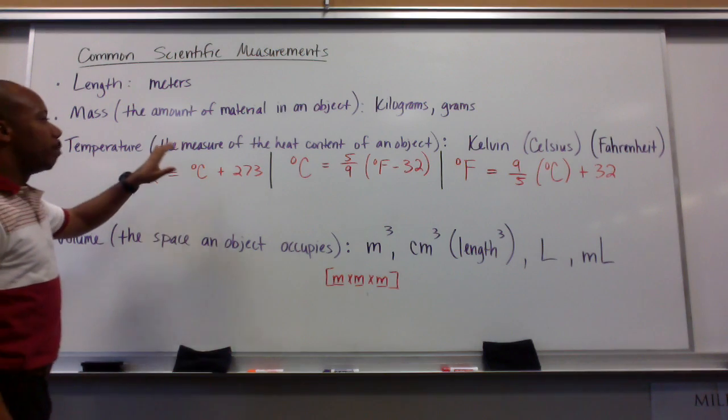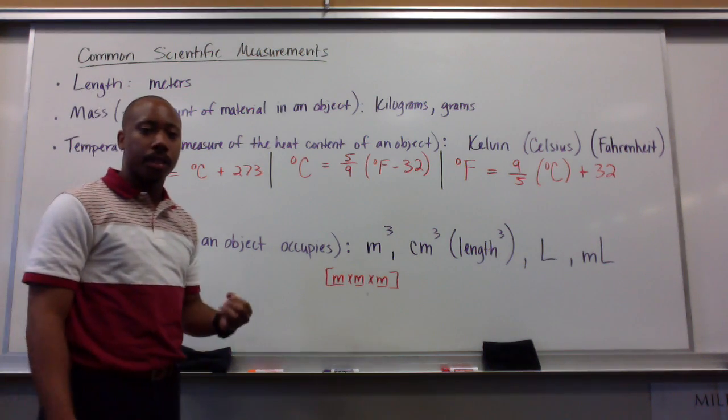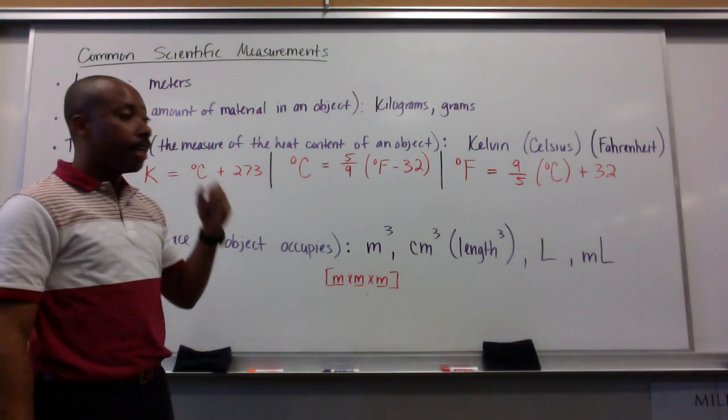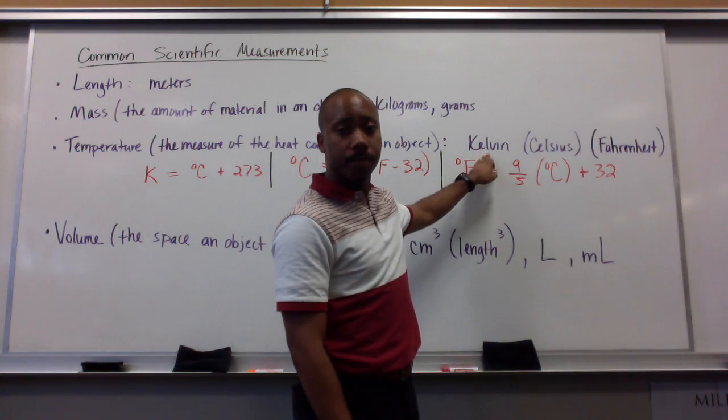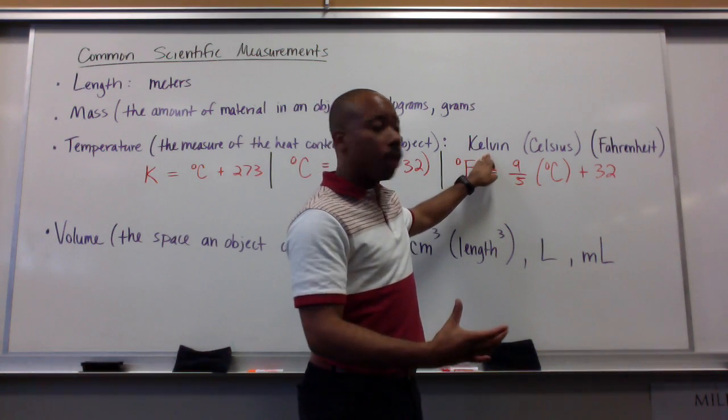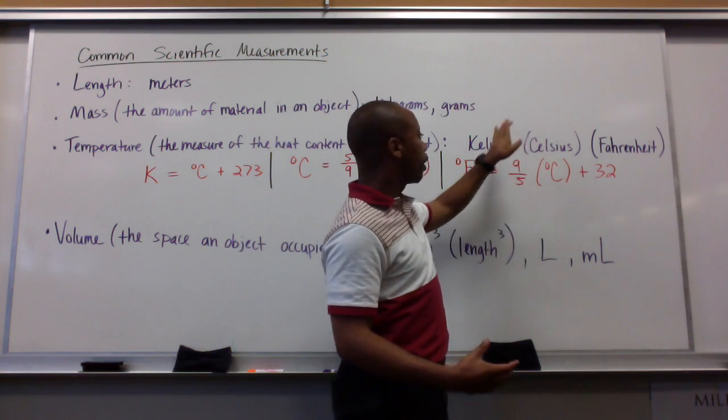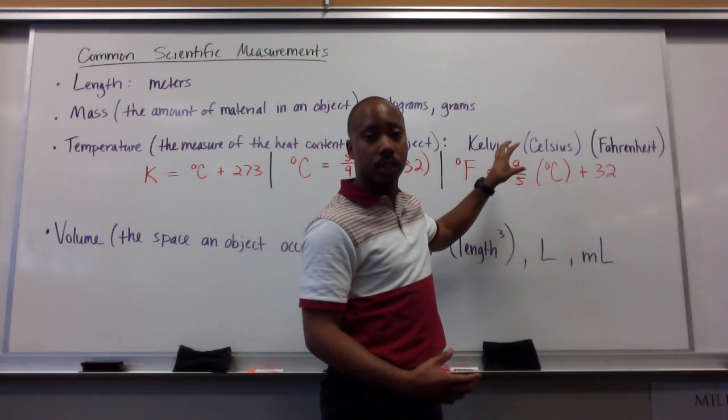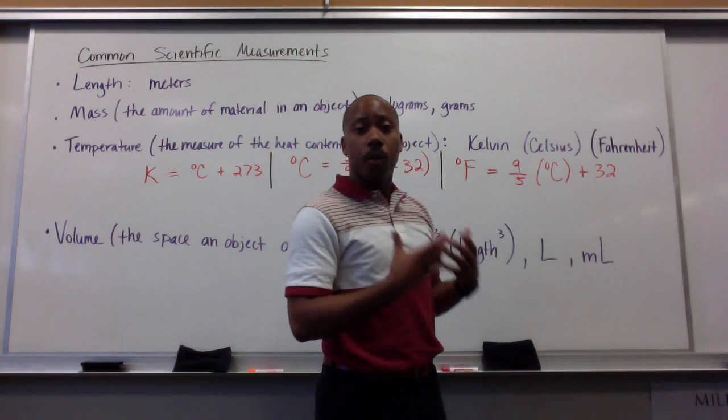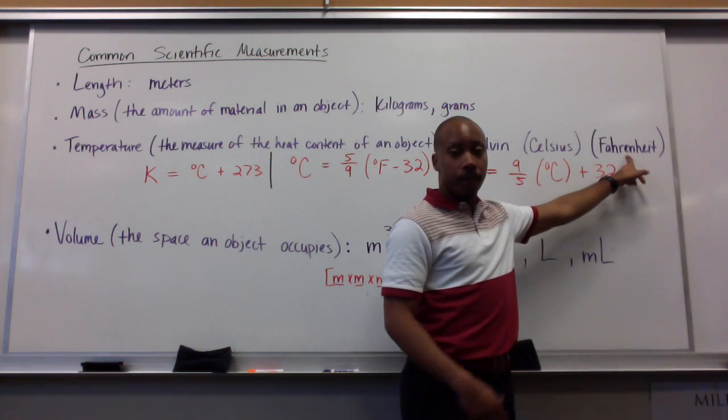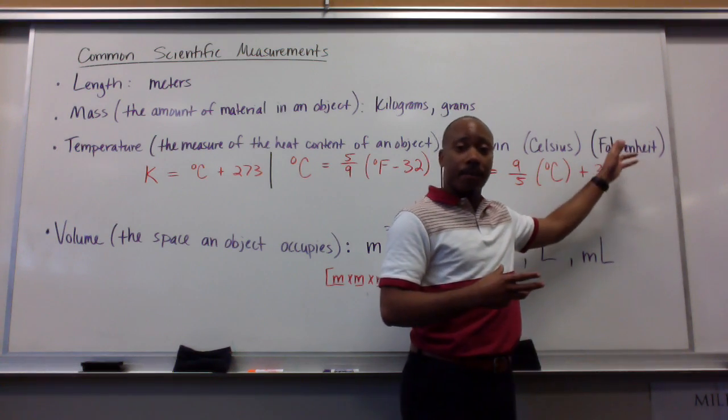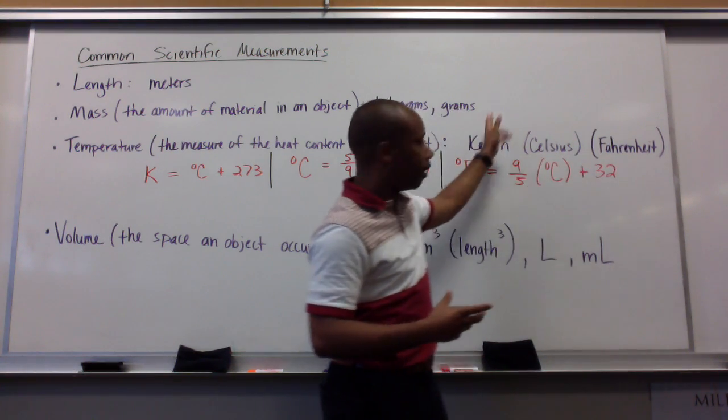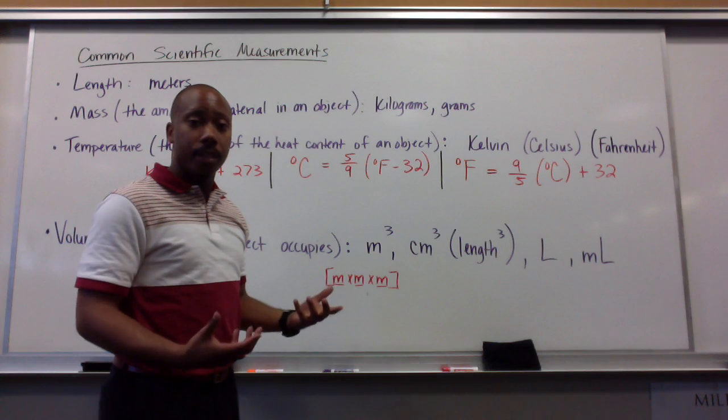Temperature, which is the measure of the heat content of an object, how hot or cold something is, is commonly in the science community measured in Kelvin. Sometimes, we measure it in degrees Celsius and convert it to Kelvin to do our calculations. Here in America, we measure temperature in degrees Fahrenheit. So, if we measure degrees Fahrenheit here, you might have to convert all the way to Celsius and then to Kelvin if it's necessary.